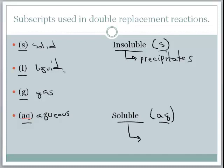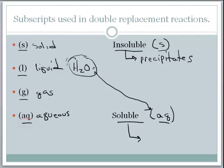For liquids, the only liquid we're going to use right now is H₂O. If something is dissolved in water, you call it aqueous; if it's a pure liquid, we call it H₂O with the designation L. For gases, we have H₂, N₂, O₂, F₂, Cl₂, carbon monoxide, and carbon dioxide — those are the seven gases we'll use. You need your solubility chart handy to do double replacement reactions.